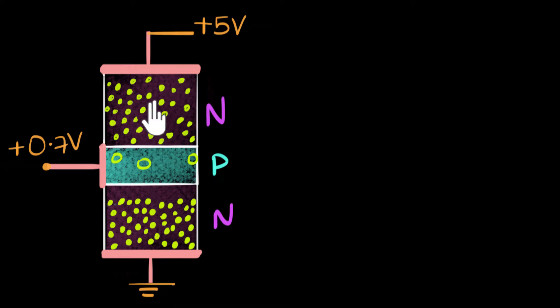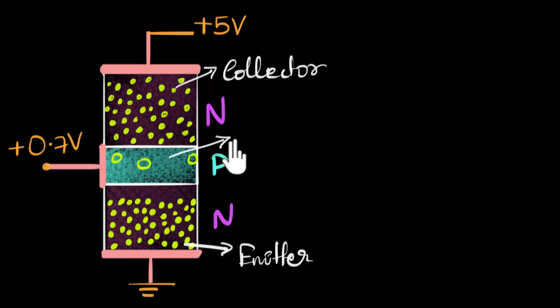So based on that, we can actually see the names behind this. Since this is emitting electrons, we call this region as the emitter. And since this is the region that collects the electrons, we call this as the collector. And this thin region in between is called the base. So the three parts of the transistors are emitter, base, and collector.